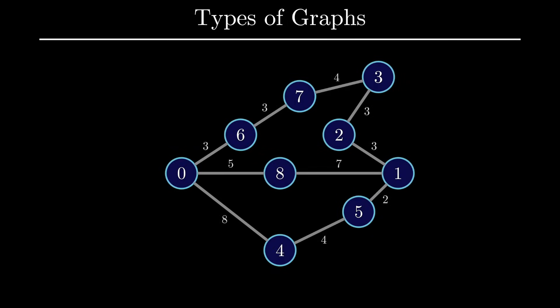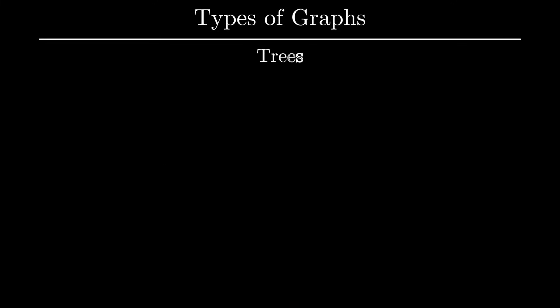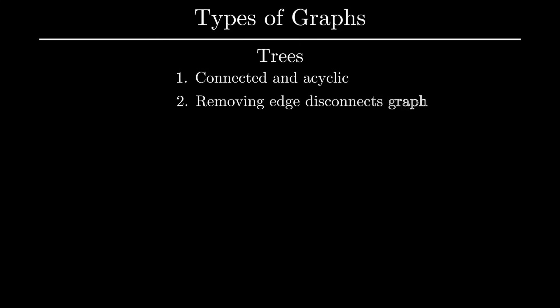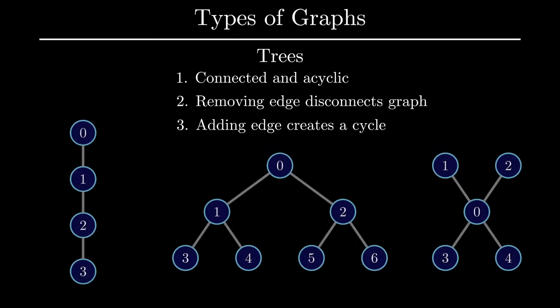Another important graph is a weighted graph. This graph is unique because each edge is not treated equally, and some edges might have a larger weight than others. This can naturally model interesting metrics like traffic, distances on maps, and many other ideas. Another important class of graphs is trees. Trees have three key properties: all trees are connected and acyclic; removing an edge from a tree will disconnect the entire graph; and adding any single edge to a tree will create a cycle. These are three valid examples of trees, and I encourage you to pause the video and confirm that all these properties hold.